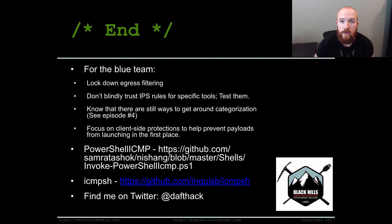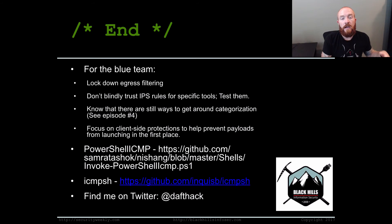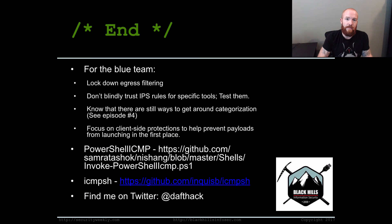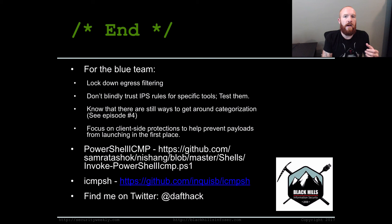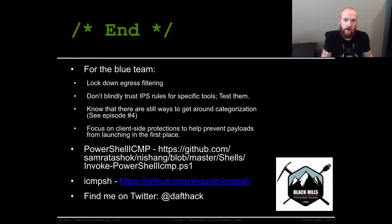Some things for the blue team: locking down egress filtering is extremely important. There are networks where TCP ports are open directly to the internet with no website filtering, making a reverse HTTPS connection through a proxy very easy. Don't blindly trust any IPS rules on your appliances — if you have a rule that's supposed to block DNScat or meterpreter, test it and make sure it works. There are also ways to get around proxy categorization; see episode four of Tradecraft Security Weekly for examples of that.